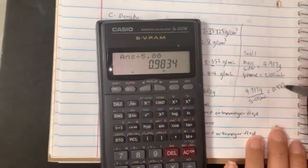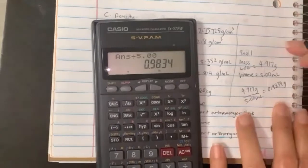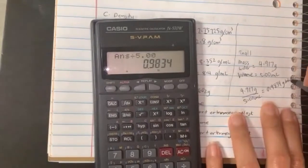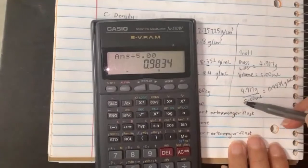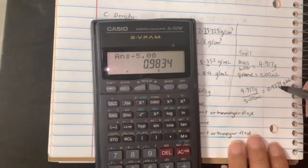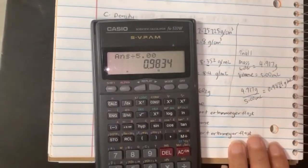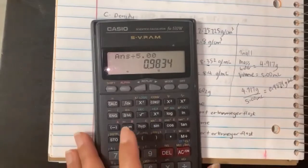Dividing by five gives 0.9834 grams per milliliter. However, you only have three sig figs here, so your answer from this trial is just three sig figs. Now let's look at trial two.